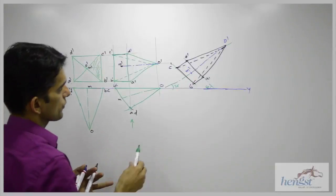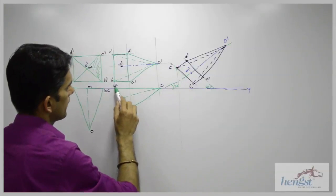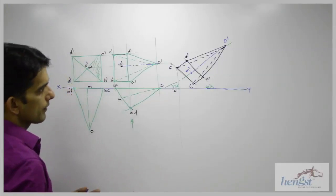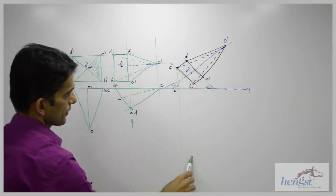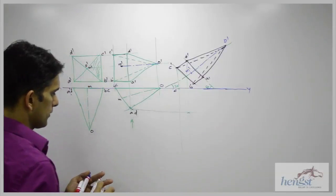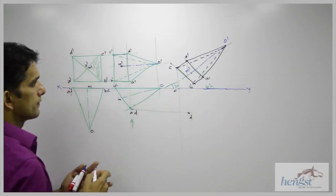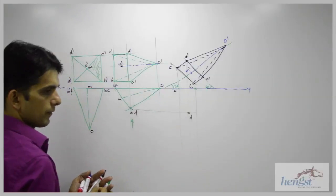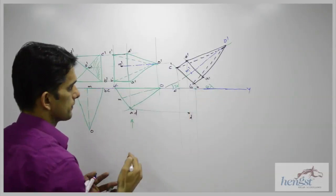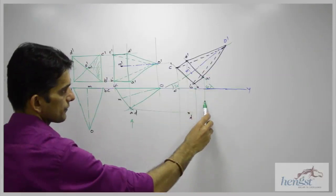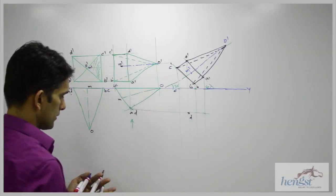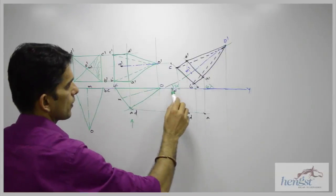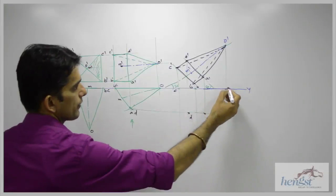So we can draw this. After that, what we need to do? We need to project. So we will project C dash from here and C from here. We will get point C. Same way we will extend D dash from here and D from here. So we will get point D. Then we will extend B dash from here, B from here. So we will get point B. Then A dash from here, A from here. So we will get point A. Then O dash from here, O from here. So we will get point O.